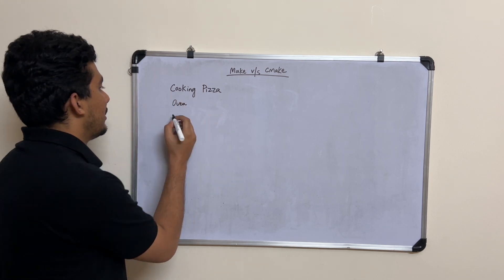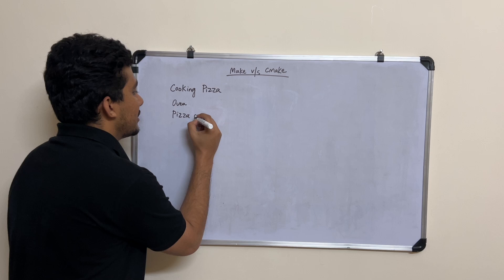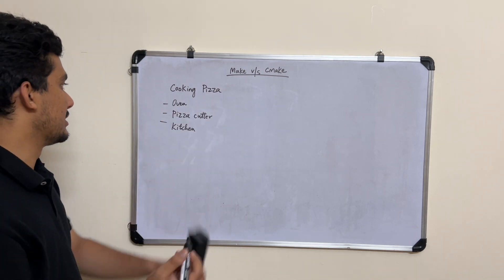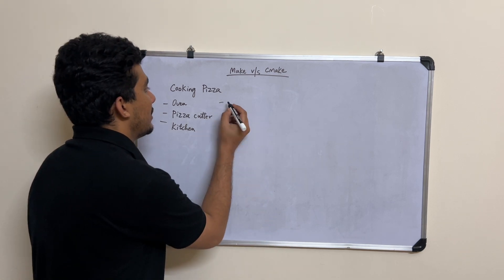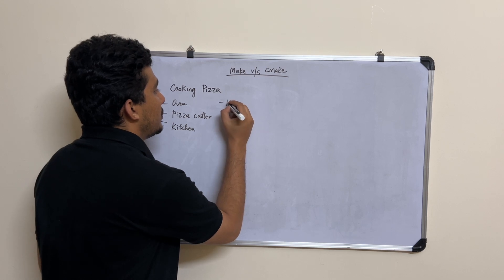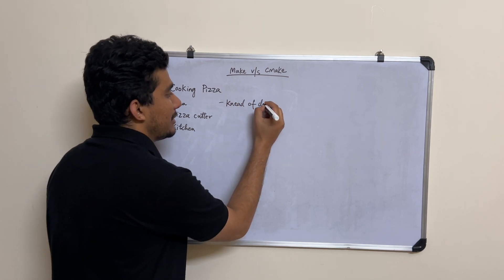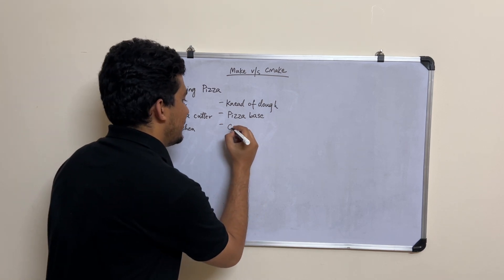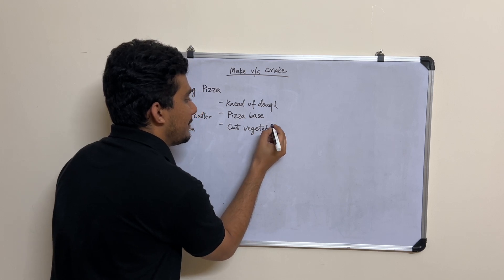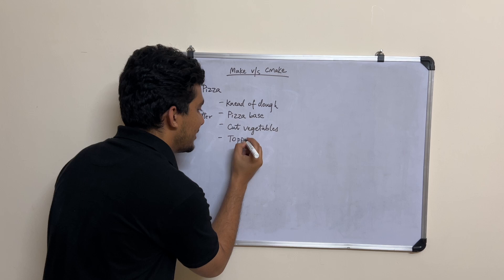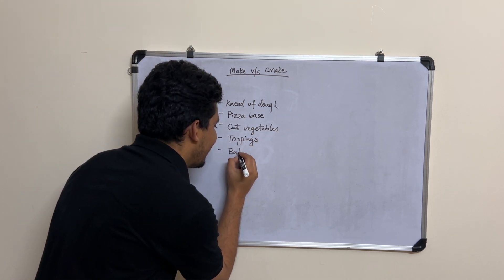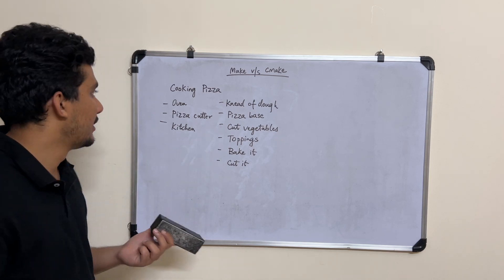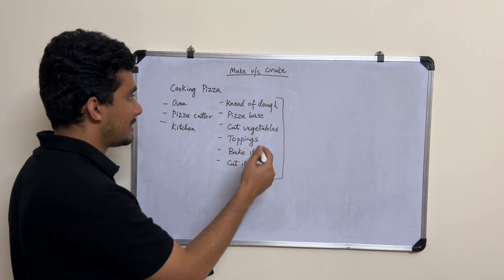Maybe you need an oven, a pizza cutter — you basically need a kitchen. There are a lot of tools needed to cook your pizza, and apart from that you also need a recipe. The steps of the recipe can be: first start with the dough and knead it, then get the pizza base, cut your vegetables, get the toppings done, bake it, and finally cut it. So there are a series of steps in making a pizza, and you also need a set of tools.